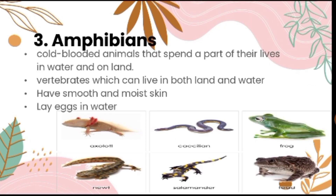Next, we have amphibians. These are cold-blooded animals that spend a part of their lives in water and on land. Vertebrates which can live in both land and water are called amphibians. They have smooth and moist skin and they lay eggs in water.